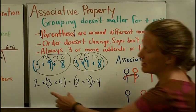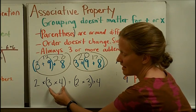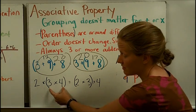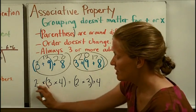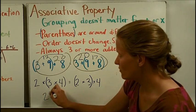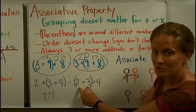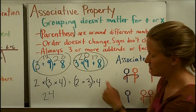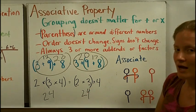The same works for multiplication. Inside the parentheses, I have to do that pair of multiplication facts first — so that would be 12, then times 2 is 24. On the other side, I do 2 times 3 first, then 6 times 4 is 24. So those are still the same.